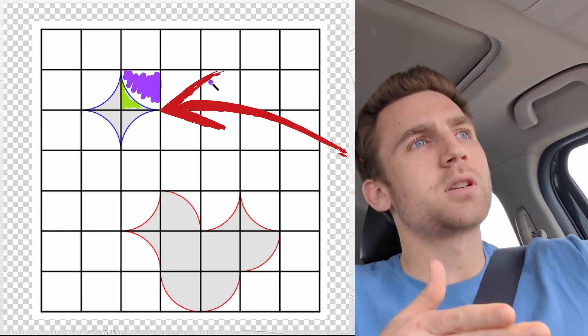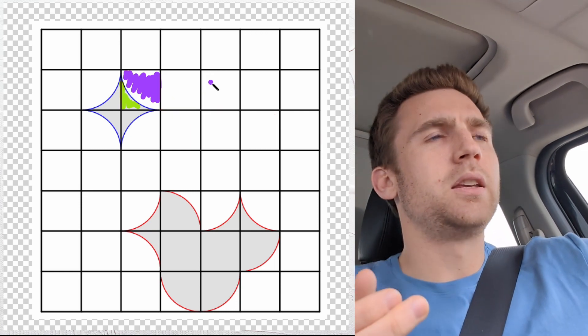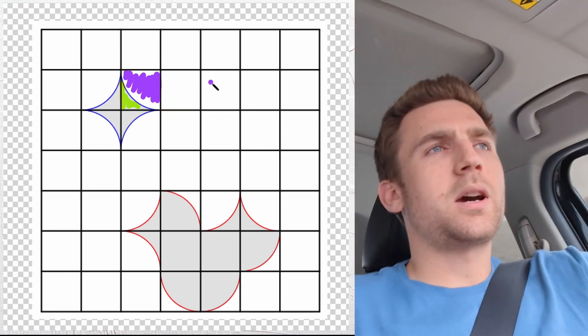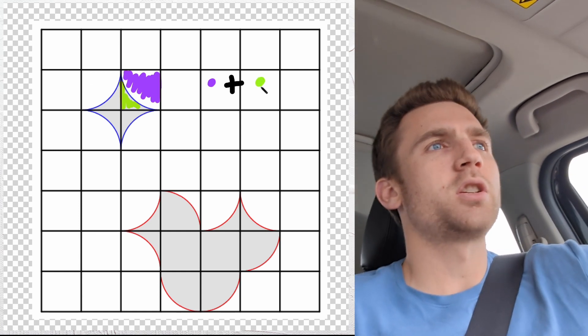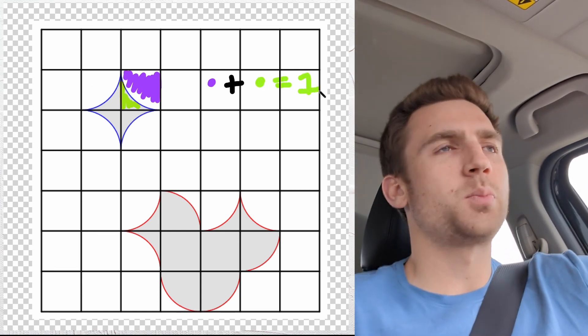You can see in that first example, it encloses a small chunk of the square, or you could have it enclose the larger part. If you add up the small portion sectioned off by the arch plus the bigger portion sectioned off by the arch, that would be 1, right? That would just be the full square.